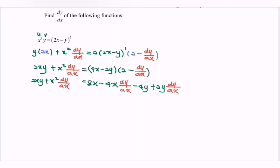So let's rearrange the equation so that we can get dy/dx. So here we have x² dy/dx. Then we have plus 4x dy/dx.